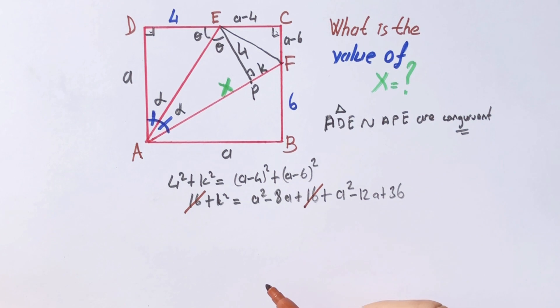The 16s are gone. K squared equals a squared, a squared, 2a squared minus 20a plus 36. Okay, this is the first equation.